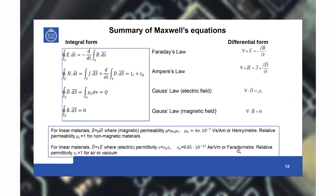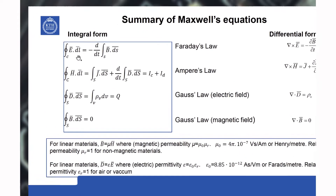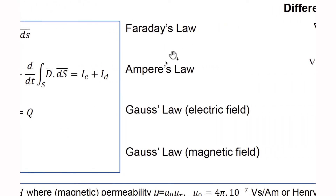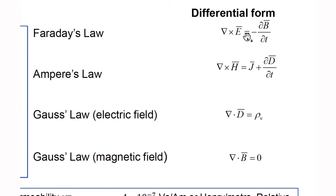Here is a summary of Maxwell's equations. The four Maxwell's equations are given in integral form: they are Faraday's law, Ampere's law, Gauss's law for the electric field, and Gauss's law for the magnetic field. Opposite to that, the differential form of Maxwell's equations — or these laws — are also given.